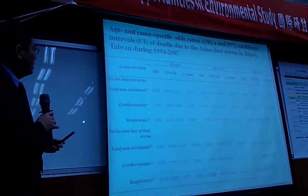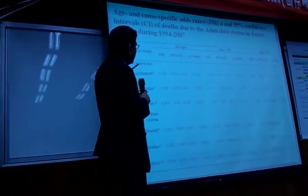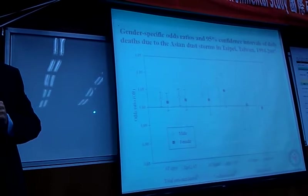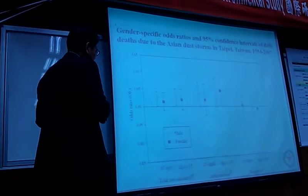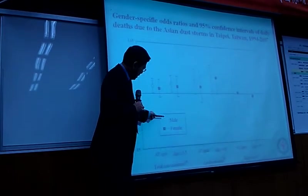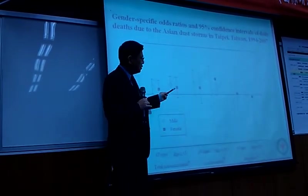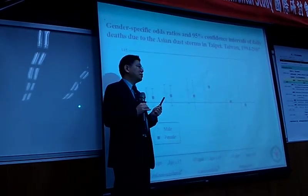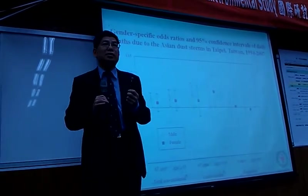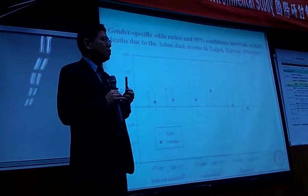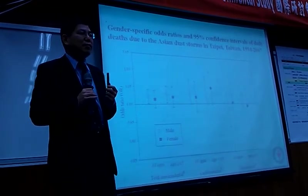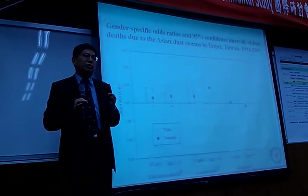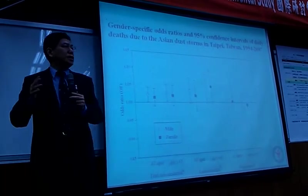Looking at the epidemiological analysis of mortality, and examining by gender — it's very interesting that Taiwanese males are more susceptible to Asian dust storms. European studies show that European women are more susceptible to African dust storms. So regional studies are important to show why there's a difference; there should be some reason to explain that. And older people, definitely — age above 65 is higher than all ages combined.